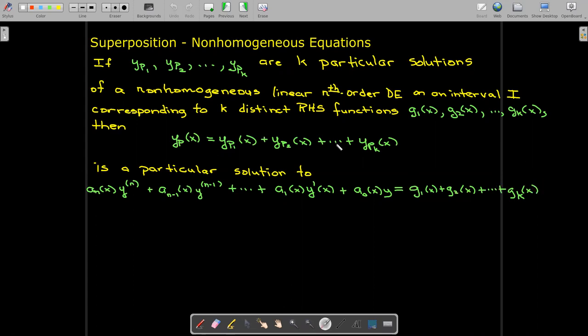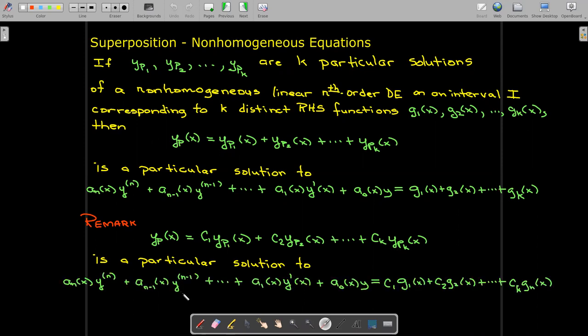And in fact, it doesn't have to be just the sum of those particular solutions. I could take any linear combination of those particular solutions, but then the right-hand side has to be a linear combination of the g functions using the same coefficients.